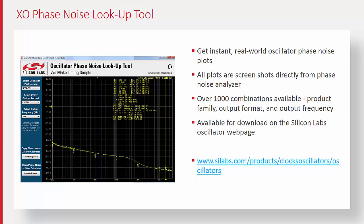The RMS integrated jitter number is shown in the second to last line of text in that plot, and the measured frequency is at the top right. In general, our parts have very low jitter and few, if any, spurs, which is what is advantageous for our devices. And if they had a question about some other plot, or if they couldn't get the exact frequency they needed and it didn't happen to be in the phase noise lookup tool, we're happy to collect a phase noise plot for them as well.